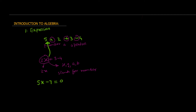For example, if I write 5X minus 7 equals 0, then this expression becomes an equation. An equation has an expression on both sides, and the left-hand side must be equal to the right-hand side. What we are saying here is that if I multiply an unknown number X by 5 and subtract 7 from that product, I will get 0. So what is the value of X? We don't know yet, but there are algebraic procedures and methods to solve these types of algebraic equations.